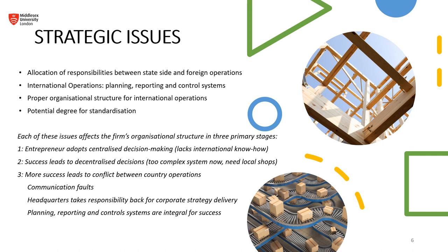Strategic issues also include proper organizational structure for international operations and the potential degree of standardization — is the domestic country similar enough to the international country to allow standardization? Each of these issues affects the firm's organizational structure in three primary stages: first, the entrepreneur adopts centralized decision making, which lacks international know-how; second, success leads to decentralized decisions because the system becomes too complex and requires local operations; or third, more success leads to conflict between country operations, especially around communication or when headquarters retakes responsibility for corporate strategy delivery.